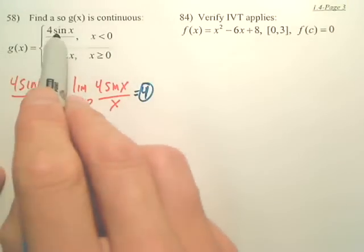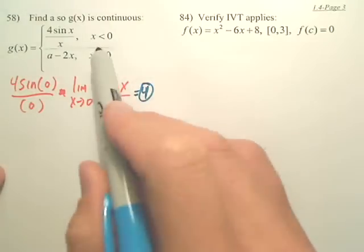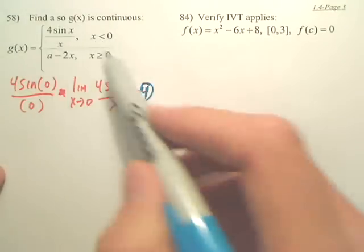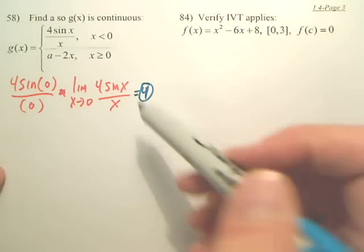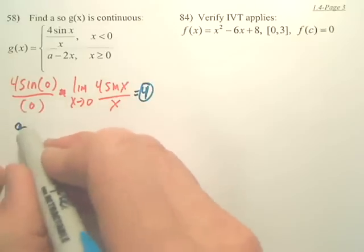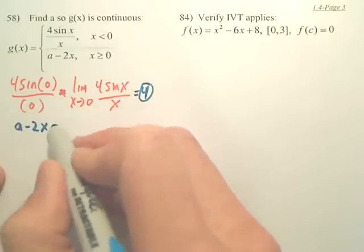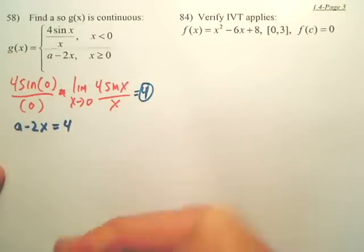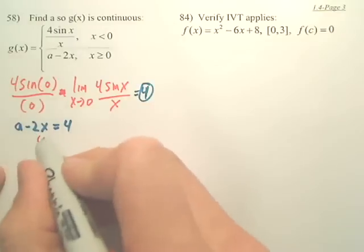So basically, do you understand this graph is approaching four as it approaches, for x equals zero, it approaches four. So would you understand that this graph, this bottom one, a minus 2x, shouldn't that equal the four here? Now, shouldn't it equal the four when x is zero?